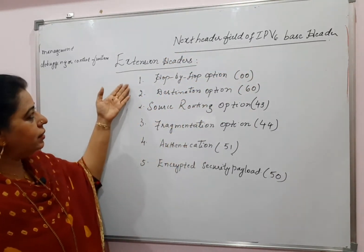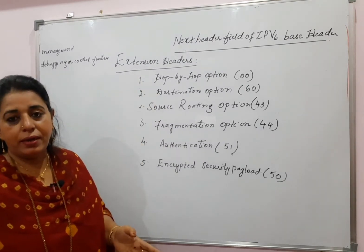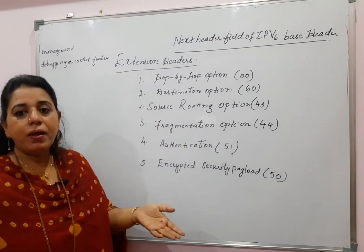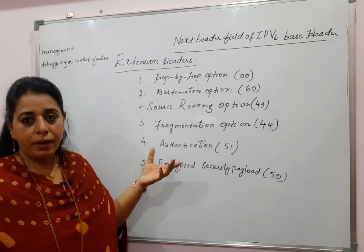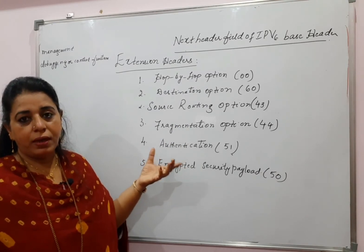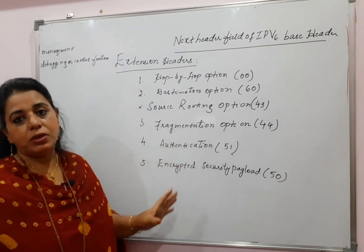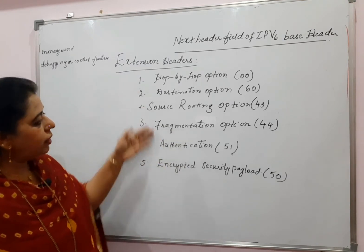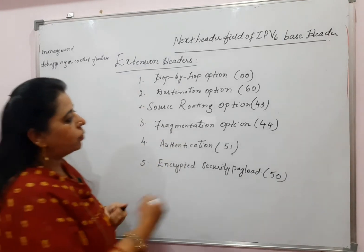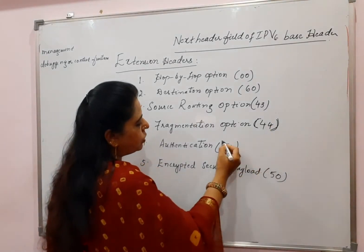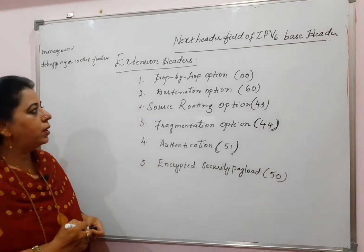The next header field can also be called extension headers. Depending on the requirement, these extension headers get included in the header part — specifically in the payload part — of the IPv6 packet. There are different extension headers, and I have written their codes in brackets. For each of these extension headers, these are the header codes.